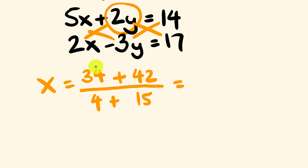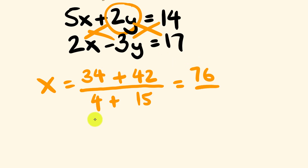So we have 34 plus 42, which is equal to 76, all over 4 plus 15, which is 19. So 76 divided by 19 — this is equal to 4. Once again, x is equal to 4.